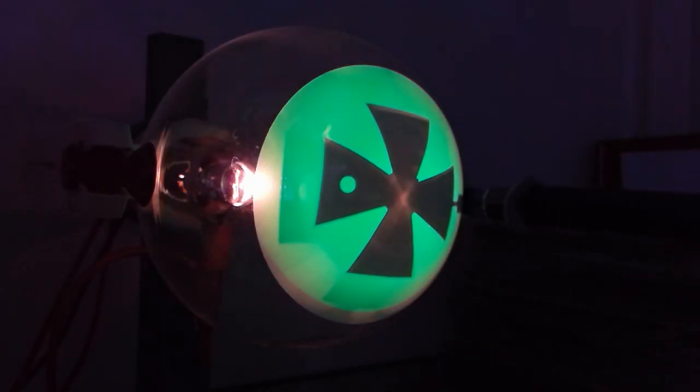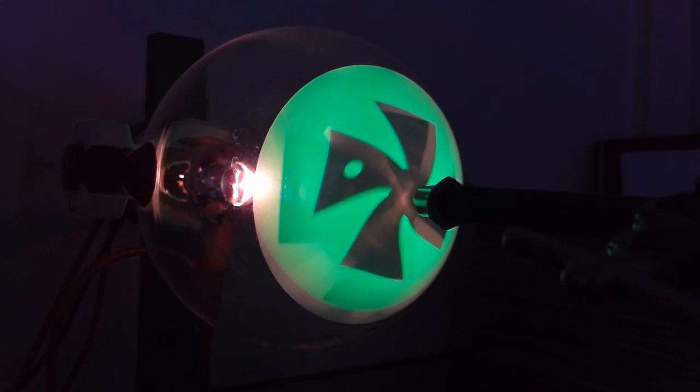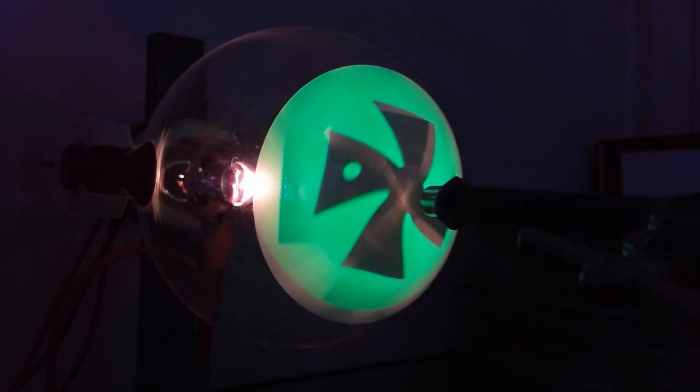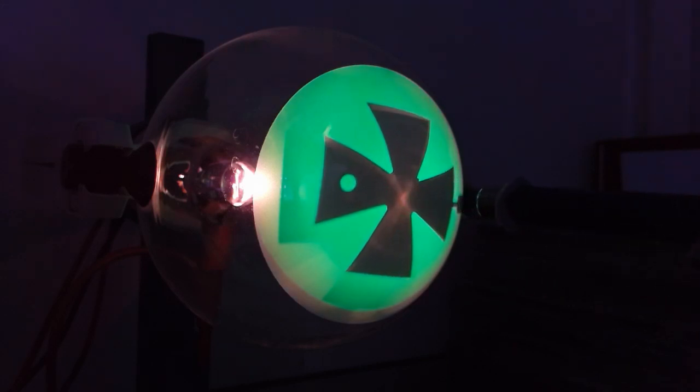And the interesting thing is when you bring the magnet near the Maltese cross orientated in this direction, you get this cool twisting effect. And if you bring the magnet up to it in different orientations, you get different distortion effects.